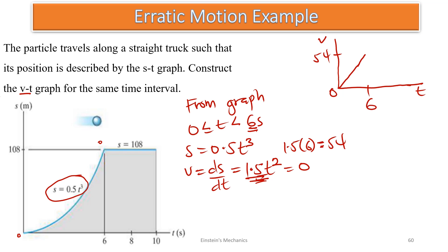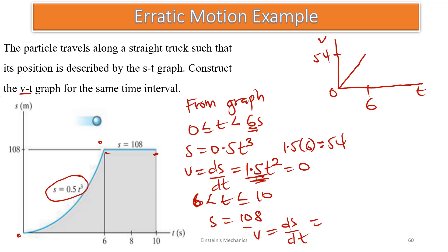The second interval is 6 < T ≤ 10. Here the position S = 108, a constant. Therefore V = dS/dT = 0. So from t = 6 onward, the velocity is 0, lying on the axis up to the final point at t = 10. This is the V-T diagram for the erratic motion.